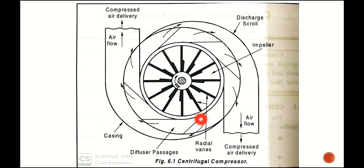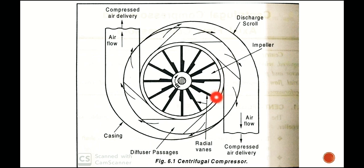As per the continuity equation, area multiplied by velocity is constant. So as the area increases in the diffuser, velocity decreases. The air entering the diffuser has high velocity; as the area increases, velocity decreases, and correspondingly the pressure increases.